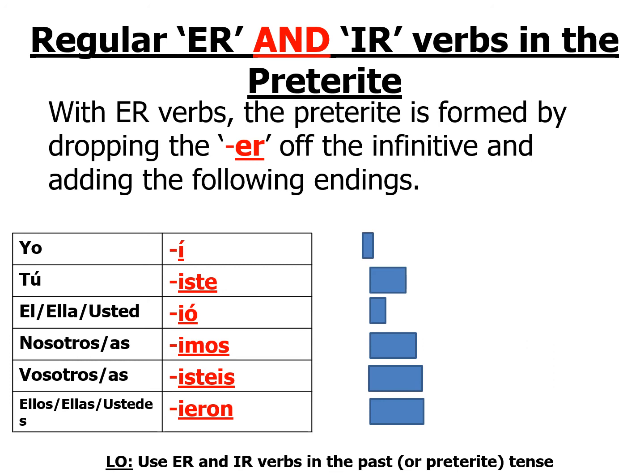With ER verbs, the preterite is formed by dropping the ER off the infinitive and adding the following endings. The pronouns are: yo, tú, él, ella, usted, nosotros, nosotras, vosotros, vosotras, ellos, ellas, ustedes. And these stand for I, you, he, she and the formal you, we, you plural, and they.